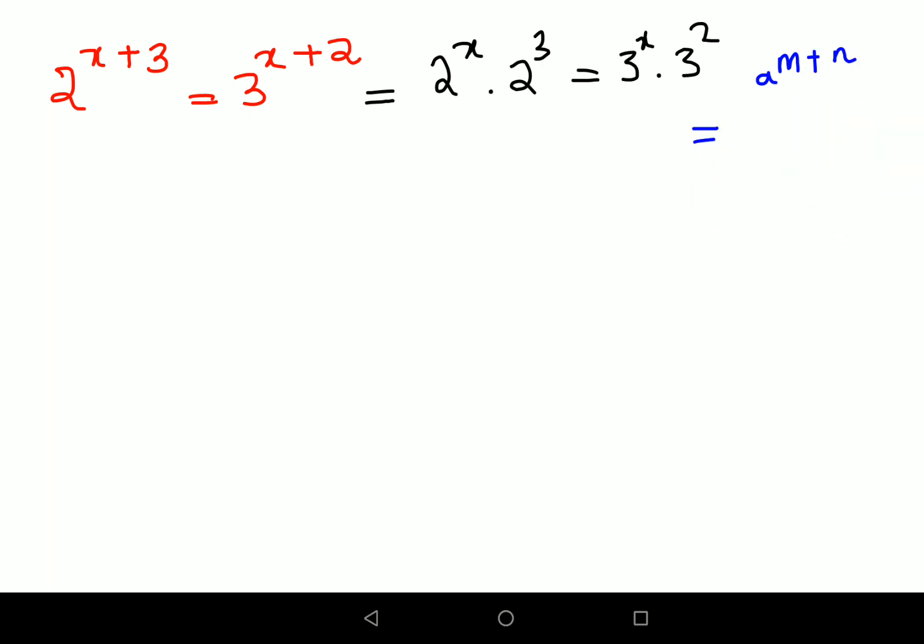Why? Because obviously a raised to indices which are added can be written as a raised to m times a raised to n. So coming back, this would now get you 2 raised to x times 8, this gets you 3 raised to x times 9.